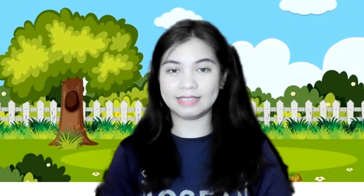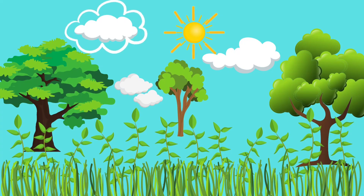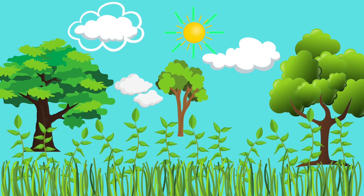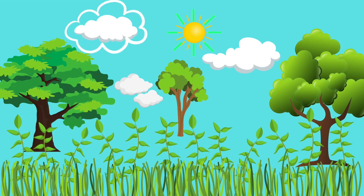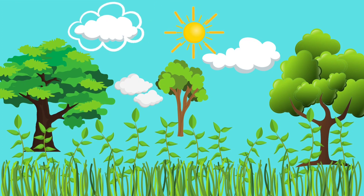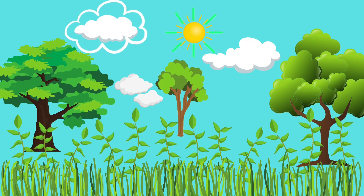Objects can be described by comparing their similarities and differences. Most plants are green. The trees are green. Some are big plants, others are small plants. Plants have different shapes of leaves.